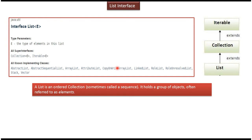In this video tutorial I will cover the List interface. Interface List belongs to java.util package. Here you can see the 'E', which is nothing but the type of elements in the list. The type can be String, Integer, Employee object, or Person object. List interface extends the Collection interface, and Collection interface extends the Iterable interface.